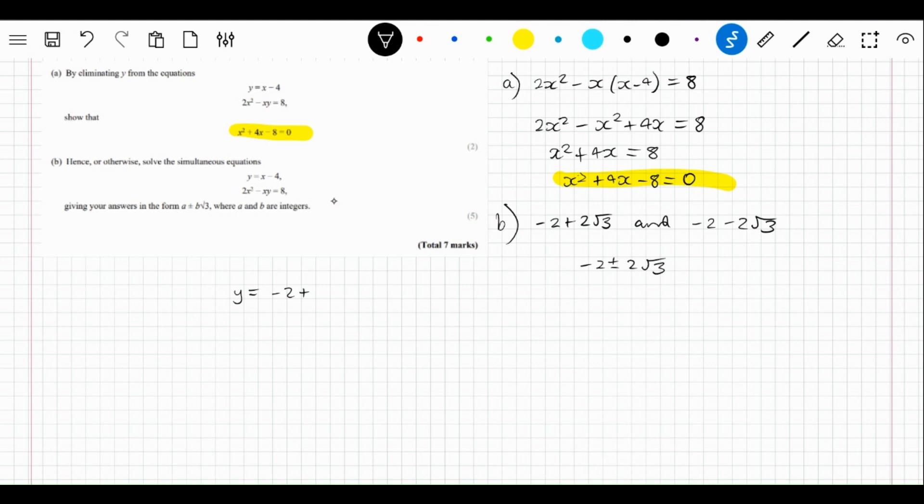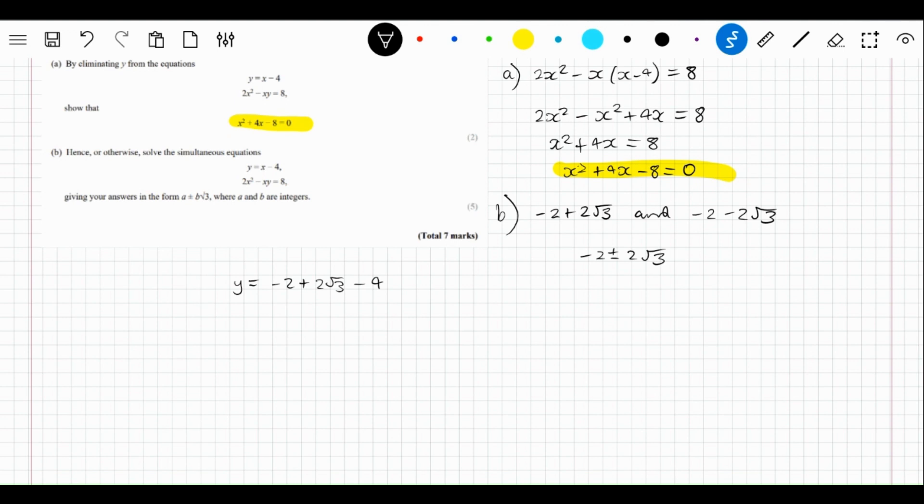That gives us y equals minus 6 plus 2 root 3. If we sub in the other value, it'll be y equals minus 2 minus 2 root 3 minus 4.